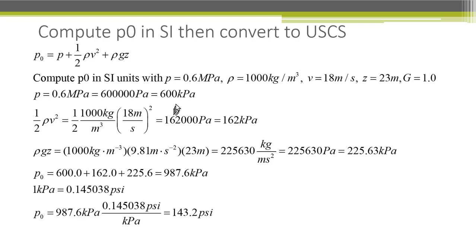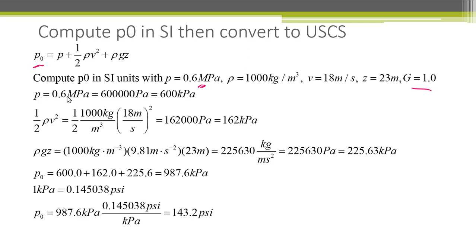Now we're going to do two quick computations, computing P-zero in SI and then converting to USCS at the end. The given values are: pressure P equals 0.6 megapascals, rho equals 1,000 kilograms per cubic meter, v equals 18 meters per second, z equals 23 meters, and g is the gravitational acceleration for water. The pressure is 0.6 megapascals, which is 600,000 pascals — we'll use 600 kPa.